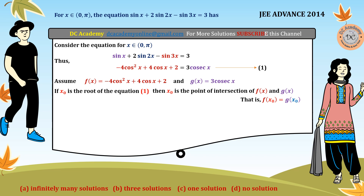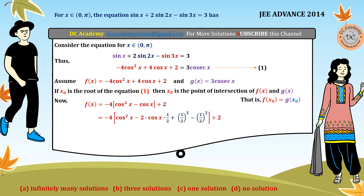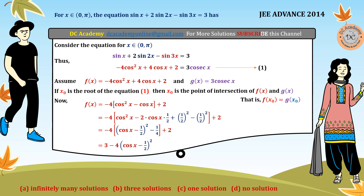To draw the graph of f(x), we use the completing the square technique. Taking 4 common, we get cos²x − cos x. We write the middle term as 2·cos x·(1/2), so b = 1/2 and b² = 1/4. The first three terms give (cos x − 1/2)², and f(x) = 3 − 4(cos x − 1/2)².